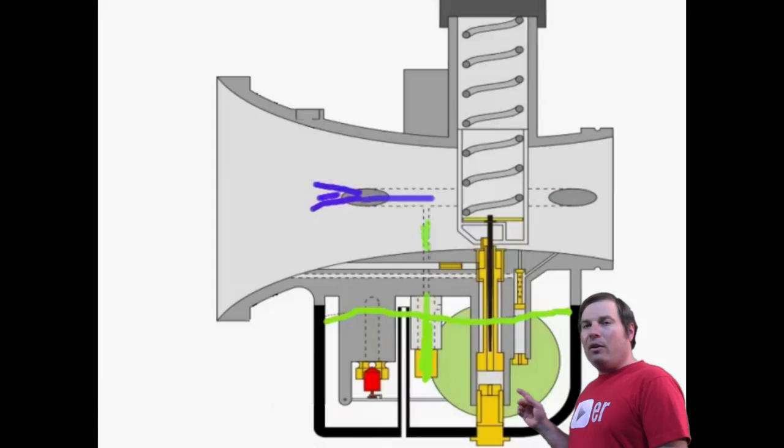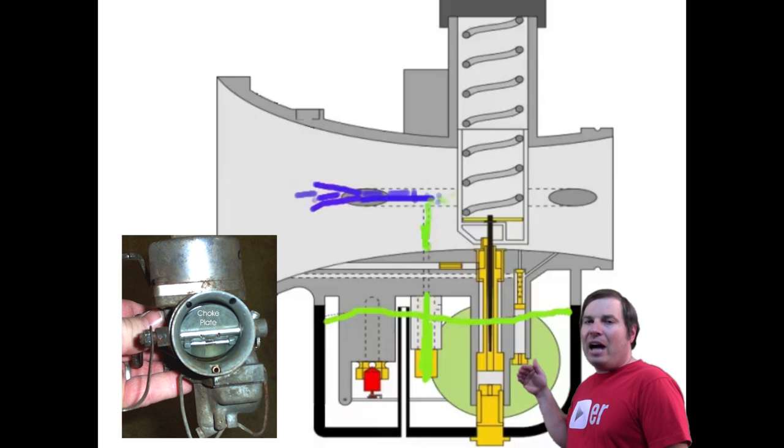Well, in this diagram, we're showing the enrichment circuit, also known by some as the choke. A choke is actually a butterfly valve that actually limits the amount of air that can flow through the carburetor's throat.